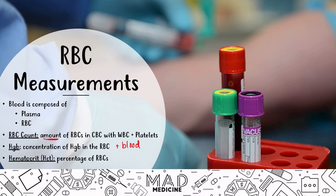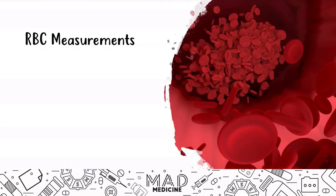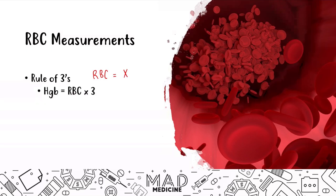When it comes to RBC measurements, you can follow something called the rule of threes, and this makes it so much easier. Let's say your red blood cell count is given and it's X. By applying the rule of threes, you can figure out how much hemoglobin and hematocrit you should have. Hemoglobin is going to be the amount of your red blood cells times three, and your hematocrit is going to be your hemoglobin times three.